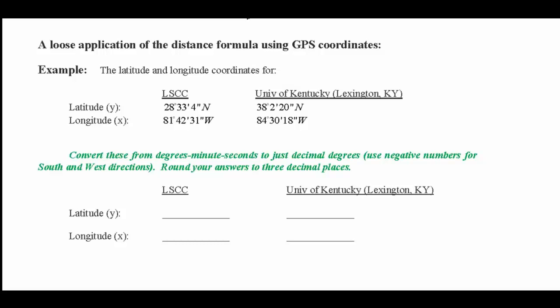The following example is a loose application of the distance formula using GPS coordinates. In this example, I've given you the latitude and longitude coordinates for Lake Sumter State College, this is actually the South Lake campus in Claremont, and an example position for the University of Kentucky at Lexington. The first thing I need to do is to convert these degree minute seconds to just decimal degrees, and remember that we're going to use negative numbers for south and west directions. We're also told to convert our values to three decimal places.